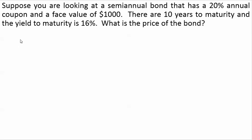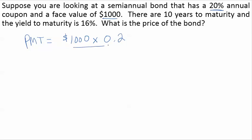Suppose you are looking at a semi-annual bond that is a 20% annual coupon, which means that each payment is $1,000 — the face value — times the coupon rate of 20%, split in half because it's semi-annual, which gives us $100 per period.